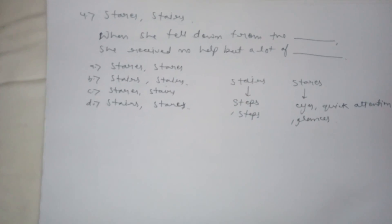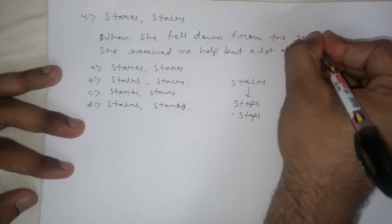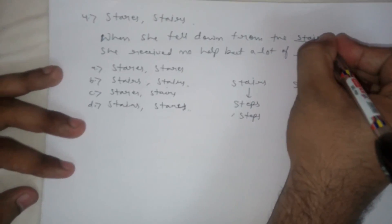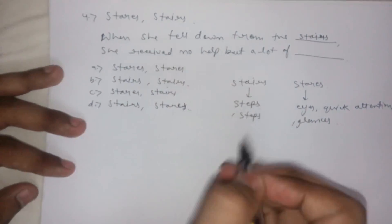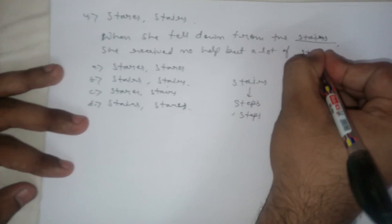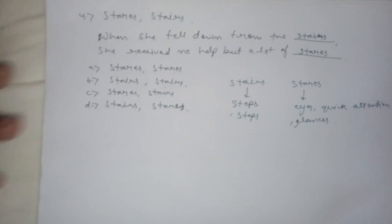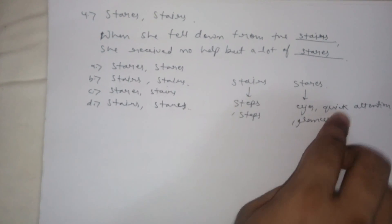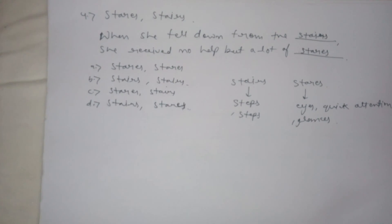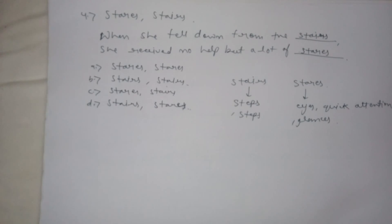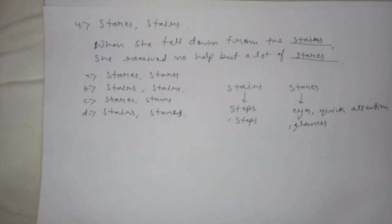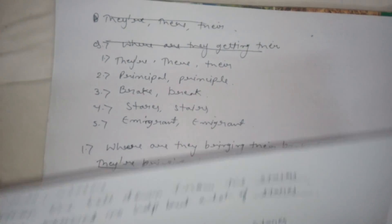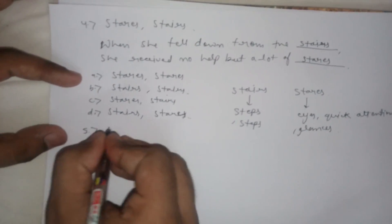So the answer is: 'When she fell down from the stairs, she received no help but a lot of stares.' 'Stares' here means the sudden attention people pay when something wrong happens — like a sudden noise or a tire bursting — people look quickly but offer no help.